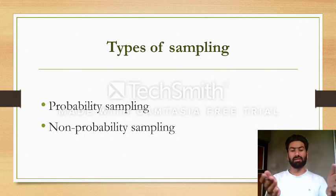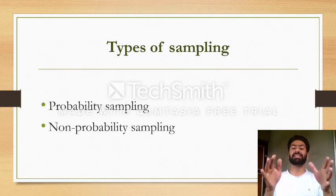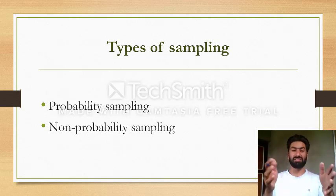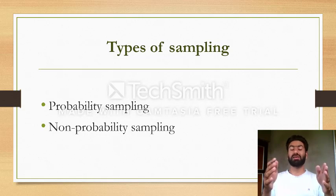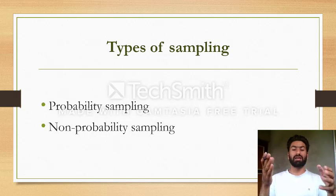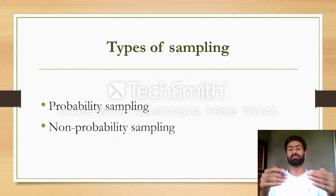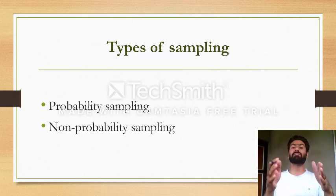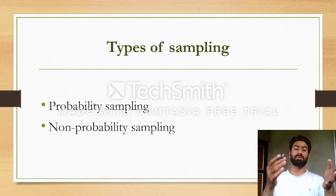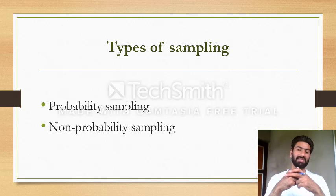Probability sampling means the procedure which is done not on the discretion or judgment of the researcher, but done through defined methods. Non-probability sampling means the procedure which is done based on the discretion or judgment of the researcher. These are the two procedures of taking samples.